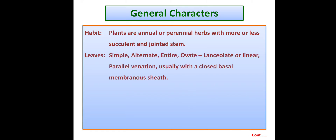Leaves are simple, alternate, and entire — meaning their margin is not serrate or dentate. The shape of the leaves is ovate, lanceolate, or linear. The leaf shows parallel venation. Usually there is a closed basal membranous sheath present at the base of every leaf at the node.